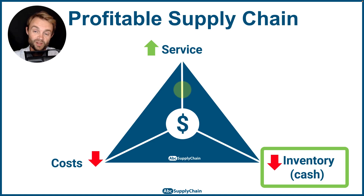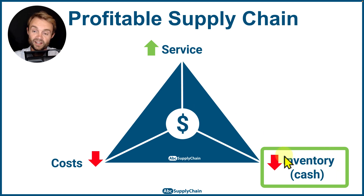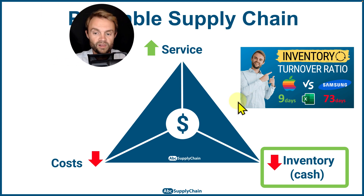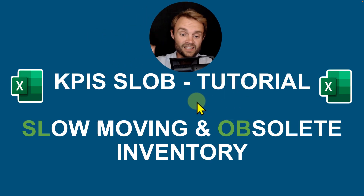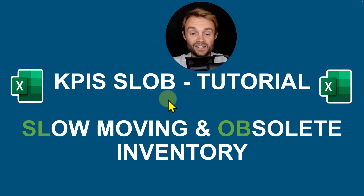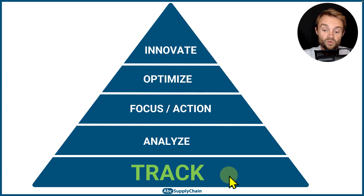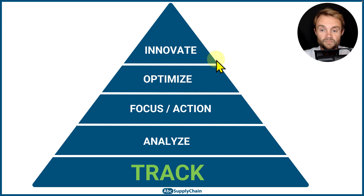If you want to have a profitable supply chain and business you need to focus on three main pillars: service, cost, and inventory. In this specific video we're going to focus on the SLOB. I really recommend you to check my inventory turnover ratio video first to focus on the global stock level, but in this one we're going to focus specifically on slow-moving and obsolete inventory. The percentage of SLOB is the quality of your inventory — the lower, the better. The idea is to track this KPI, then analyze, focus, optimize, and if necessary implement innovations to improve your supply chain performance.